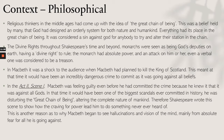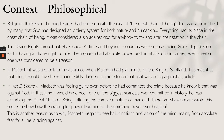In Macbeth, it was a shock to the audience when Macbeth planned to kill the king of Scotland. At that time, it would have been an incredibly dangerous crime, going against all beliefs. In Act 2 Scene 1, Macbeth was feeling guilty even before committing the crime because he knew it was against God — it would have been one of the biggest scandals in history. He was disturbing the Great Chain of Being, which is another reason Macbeth began to see hallucinations and visions, mainly from absolute fear of what he was going against.